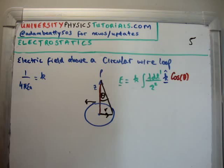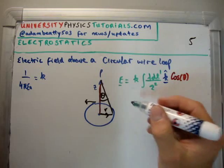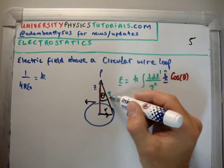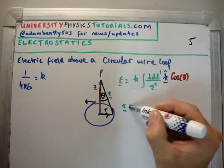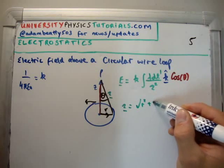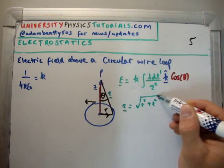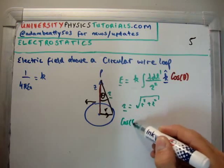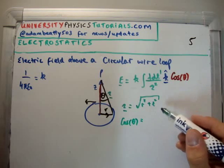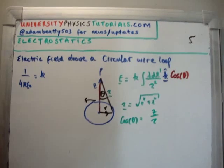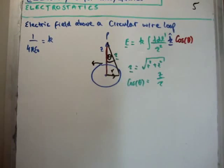So how do we evaluate this? It's pretty straightforward. If you look at the separation vector, which is here, the separation vector is equal to the square root of r² plus z². And that means that cosine of theta is equal to z over the separation vector, or the magnitude of the separation vector at the very least.